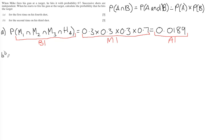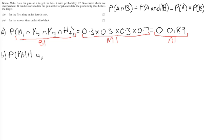Part B: he wants to hit the target for the second time on his third shot. The ways we can think about this are either a miss followed by a hit and then a hit, or a hit followed by a miss followed by a hit. We can't have hit, hit, miss because we must hit for a second time on the third shot.